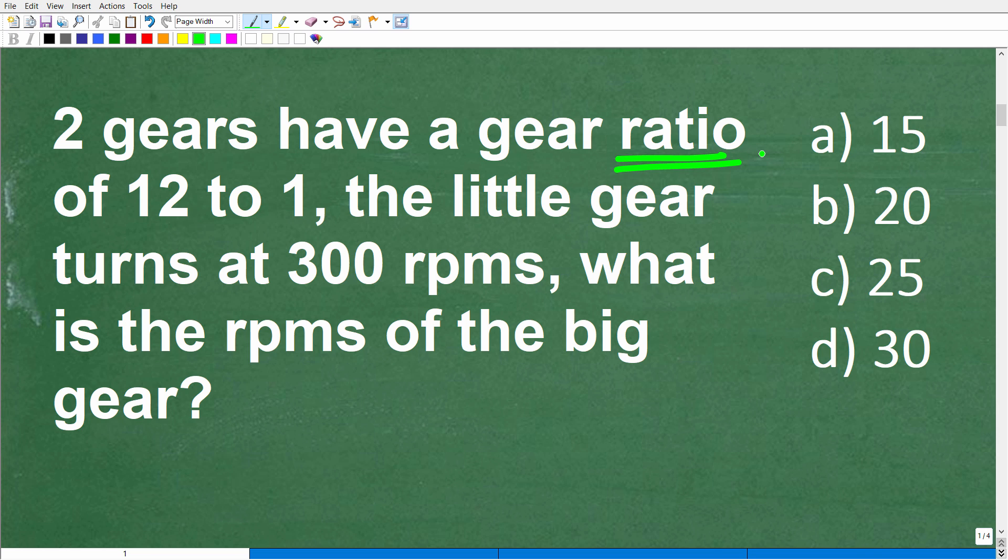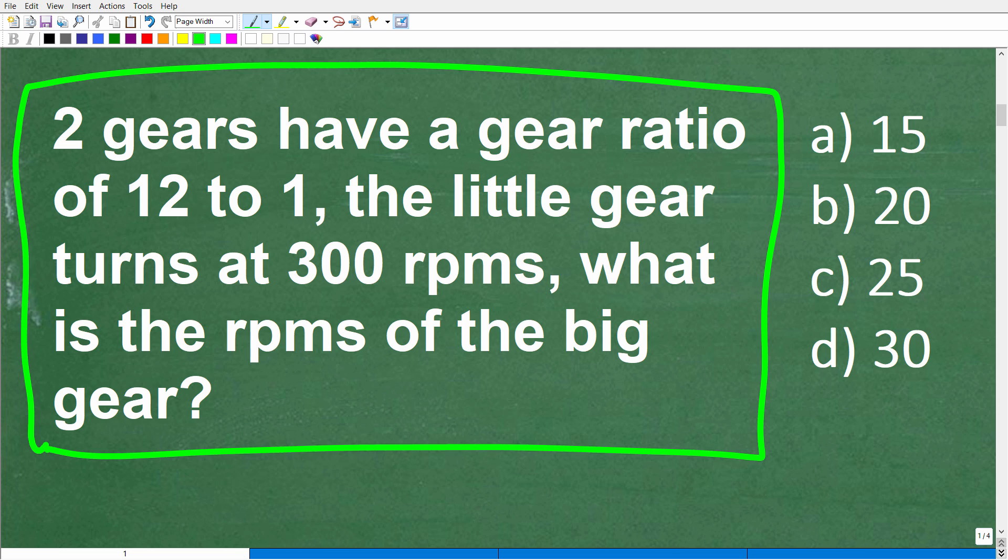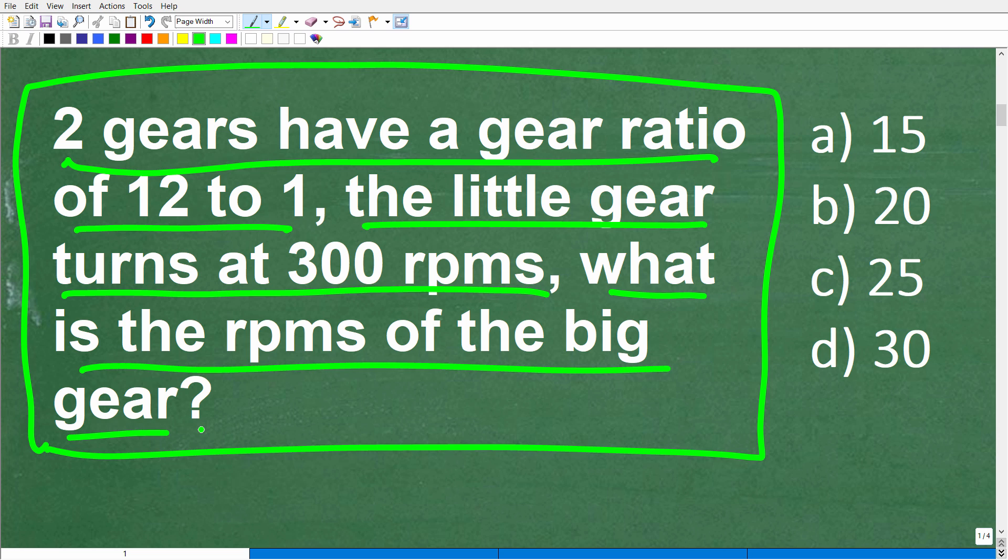Here is the text version or written version of the same problem. I wanted to show you a visualization of the problem so you can get interested in solving it. It says two gears have a gear ratio of 12 to 1. The little gear turns at 300 RPMs. What is the RPMs of the big gear?